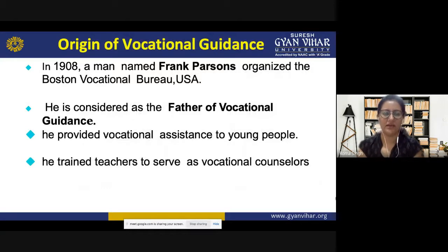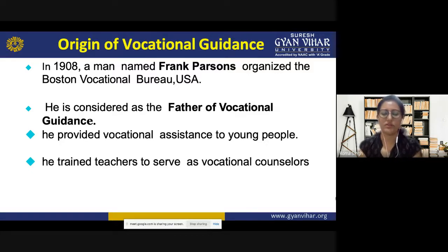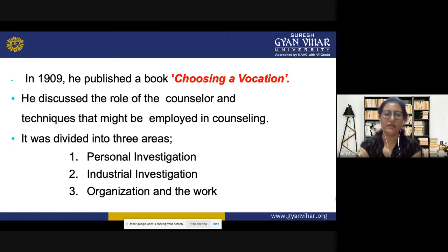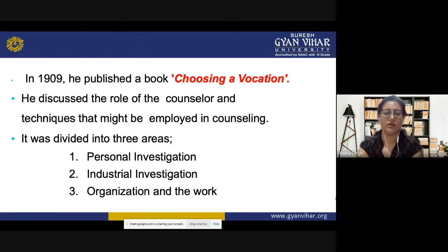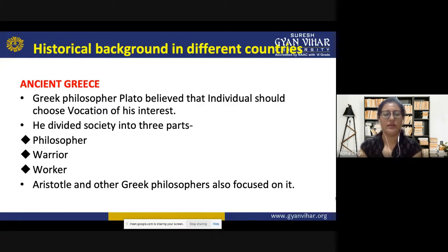Let us take a look at the origin of vocational guidance. In 1908, a man named Frank Parsons organized the Boston Vocational Bureau in the USA. He is known as the father of vocational guidance and provided vocational assistance to young people. He trained teachers to serve as vocational counselors. In 1909, he published a book called 'Choosing a Vocation,' discussing the role of the counselor and techniques for counseling. It was divided into three areas: personal investigation, industrial investigation, and organizational work.